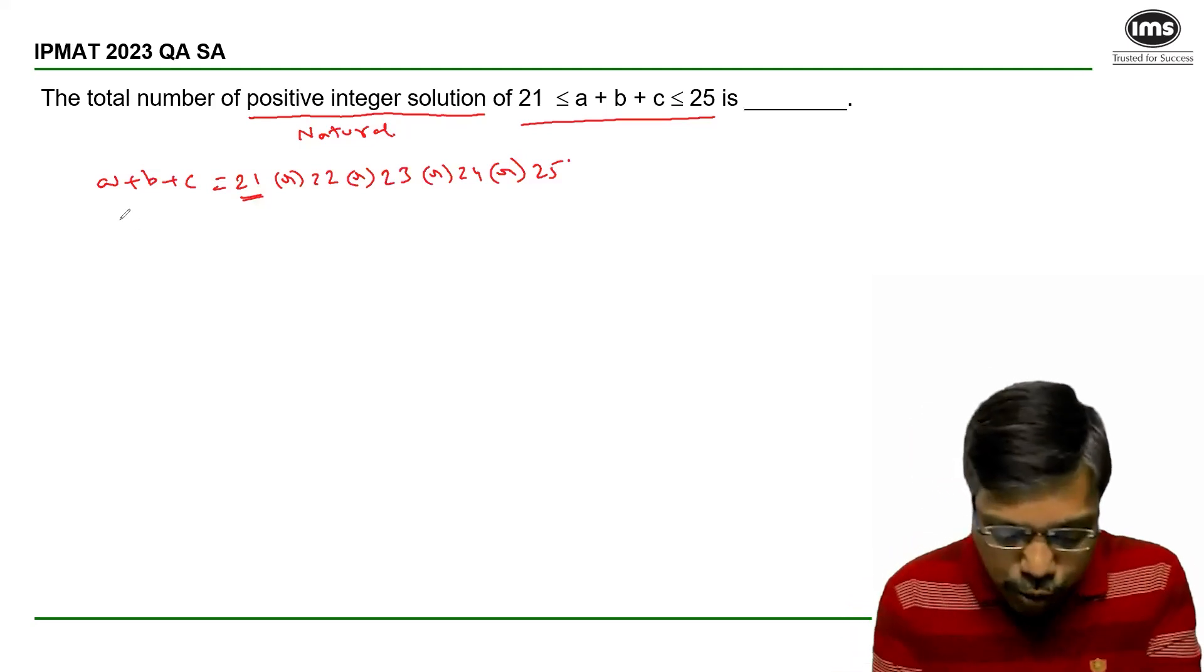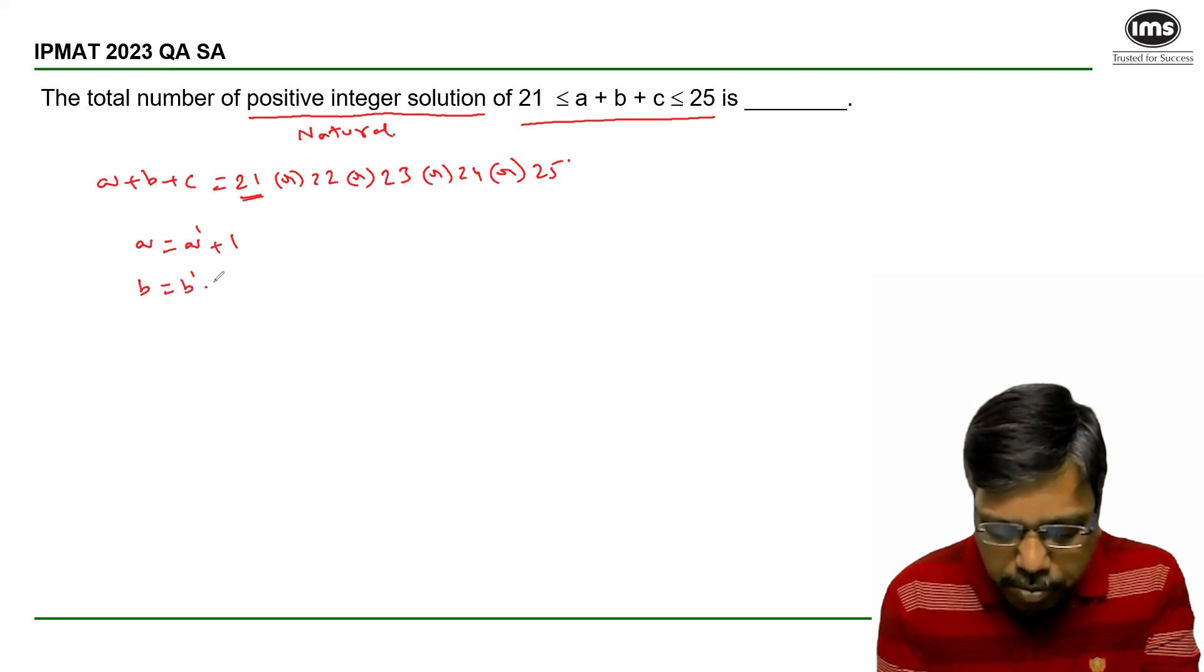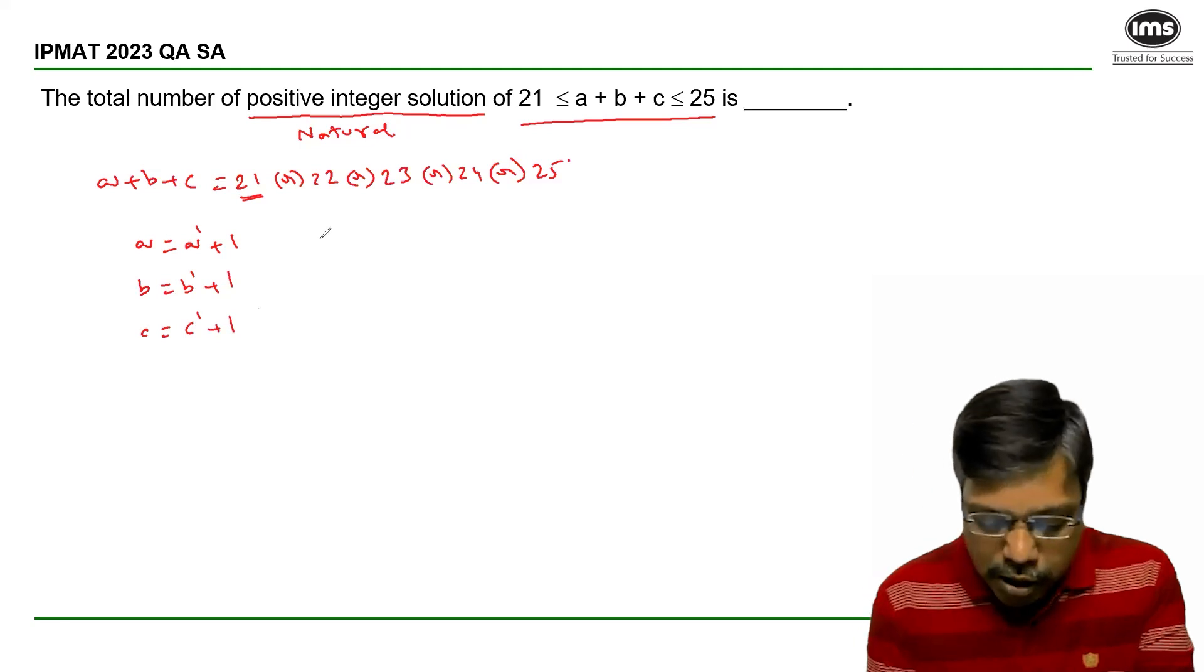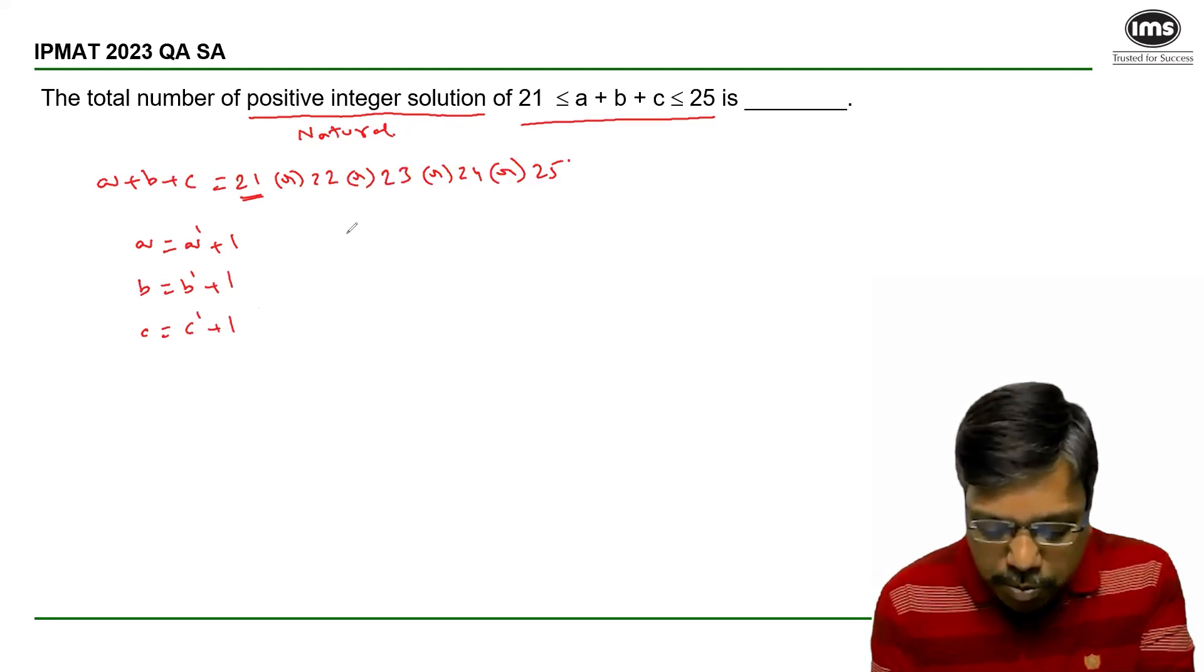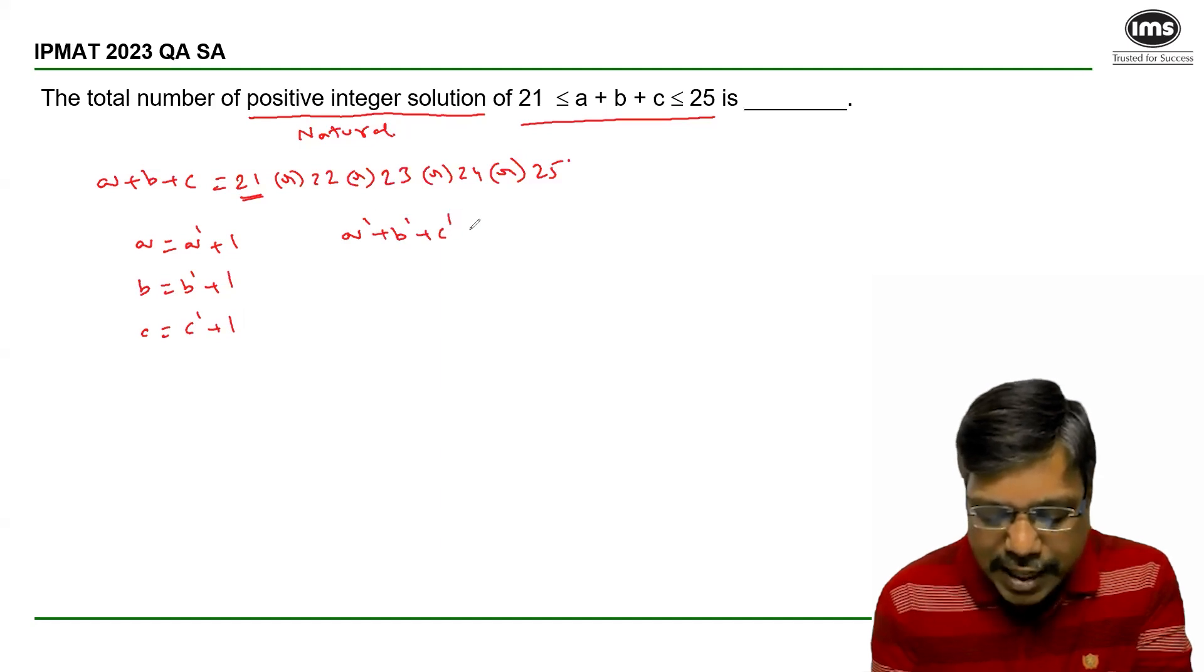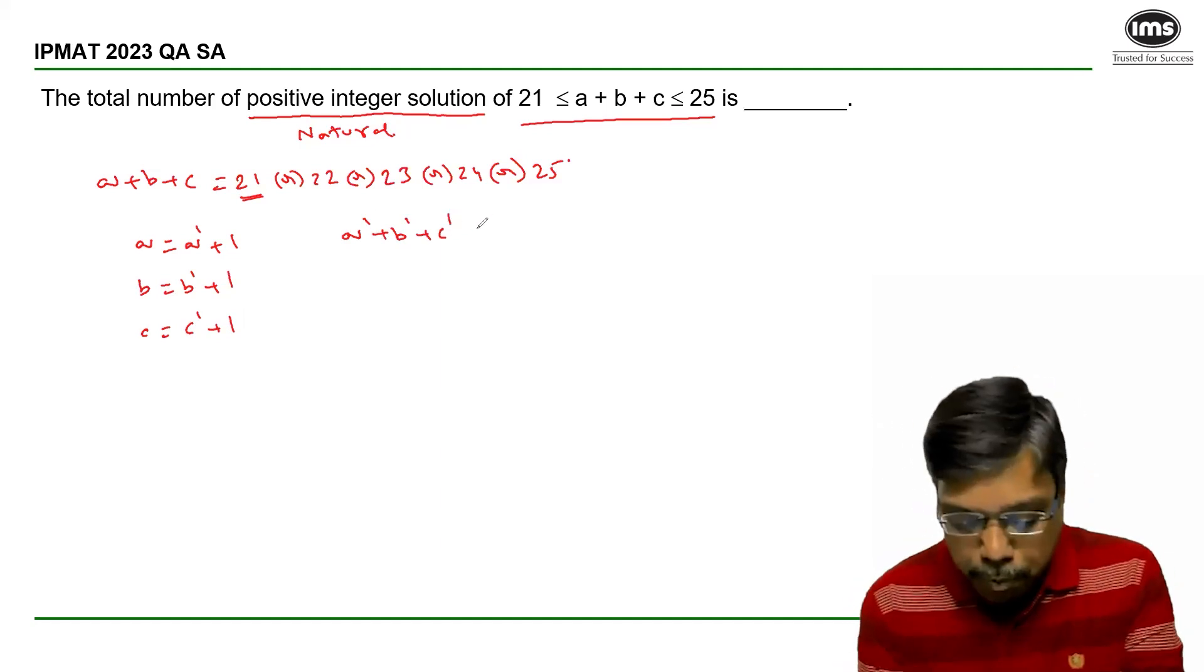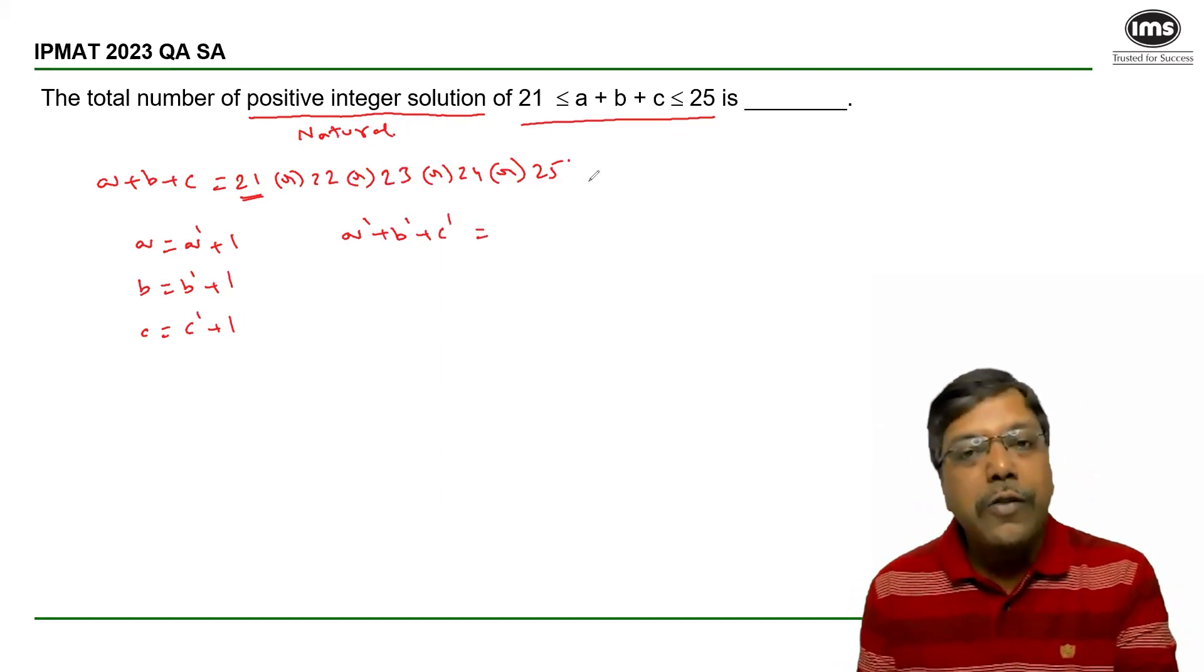To cater to that, I will replace A with A' + 1, B with B' + 1, and C with C' + 1. Because of this, A + B + C becomes A' + B' + C' + 3 equals 21 to 25.